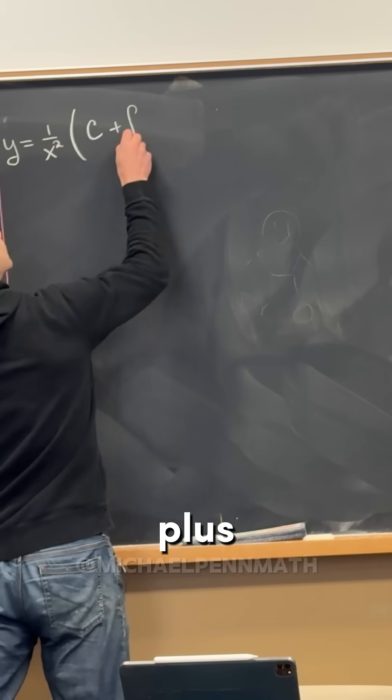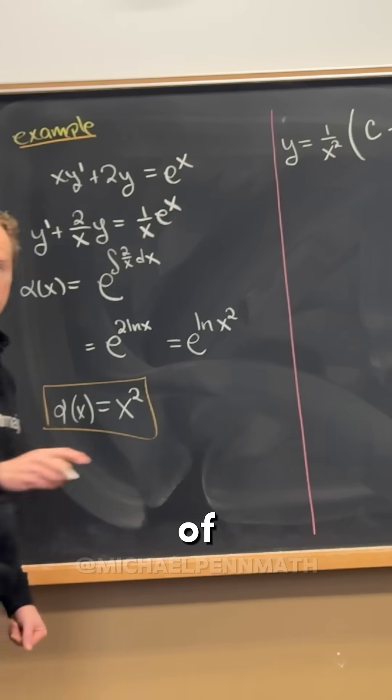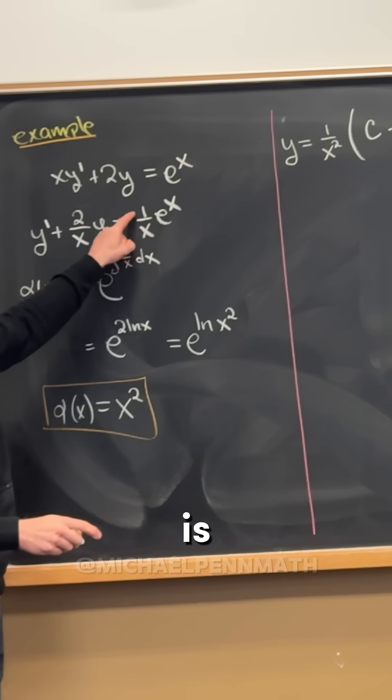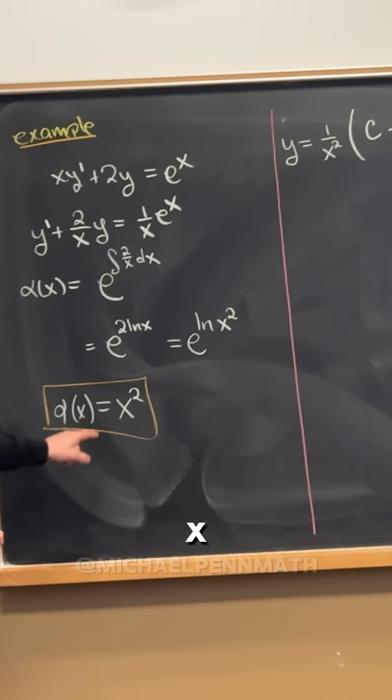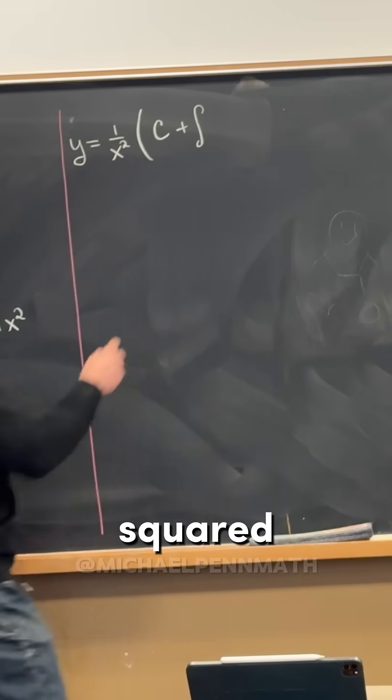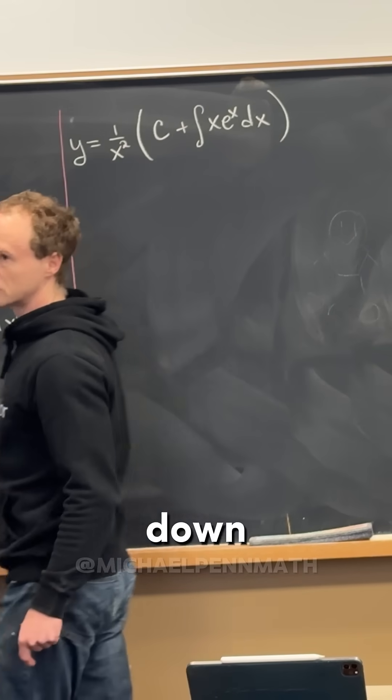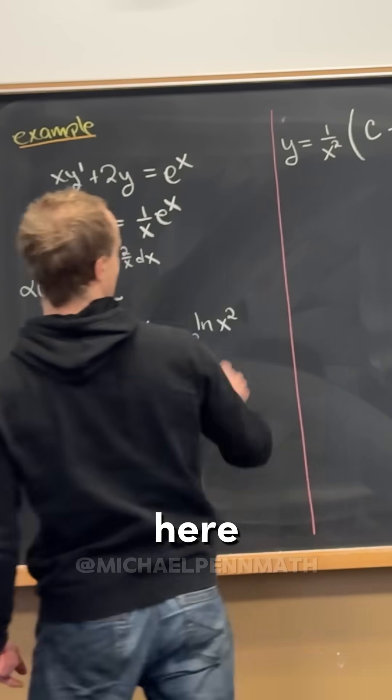And then plus the antiderivative of, so check it out, it's alpha of x times b. So b here is 1 over x times e to the x. If we multiply that by x squared, that's going to cancel the 1 over x down to this thing right here.